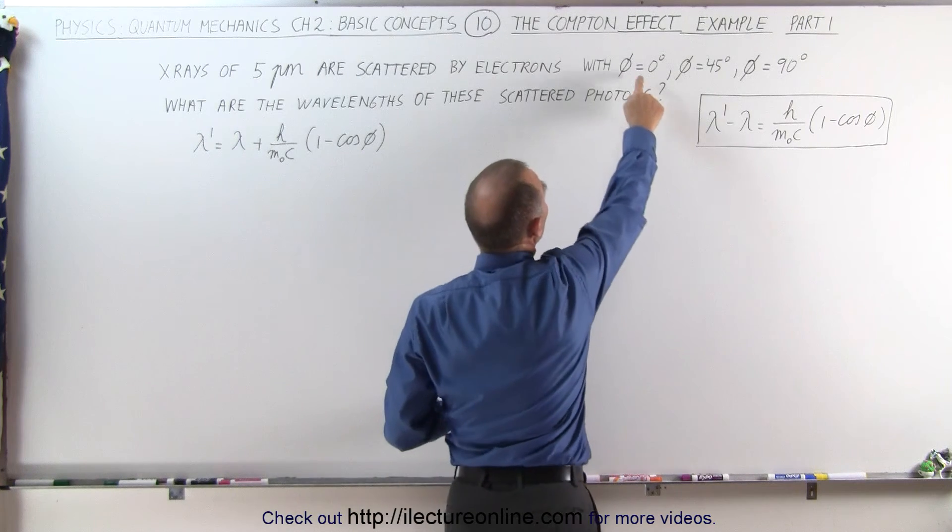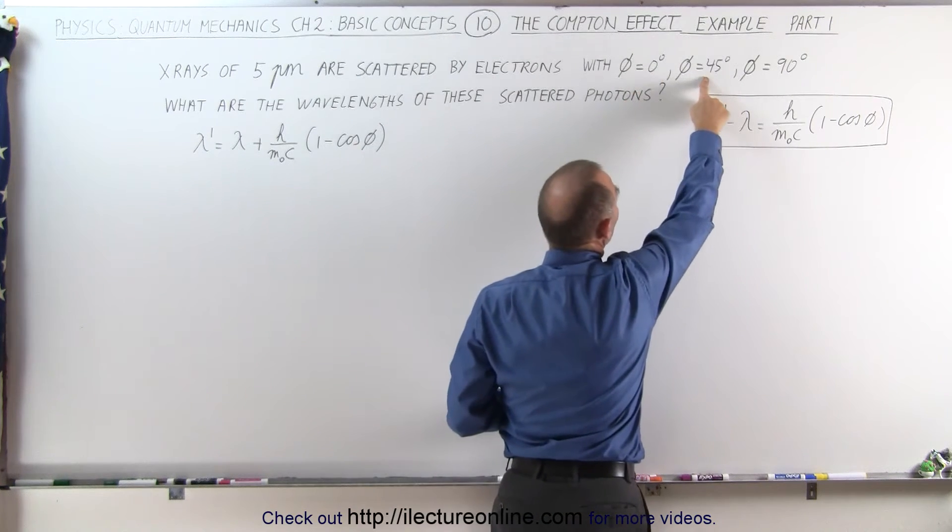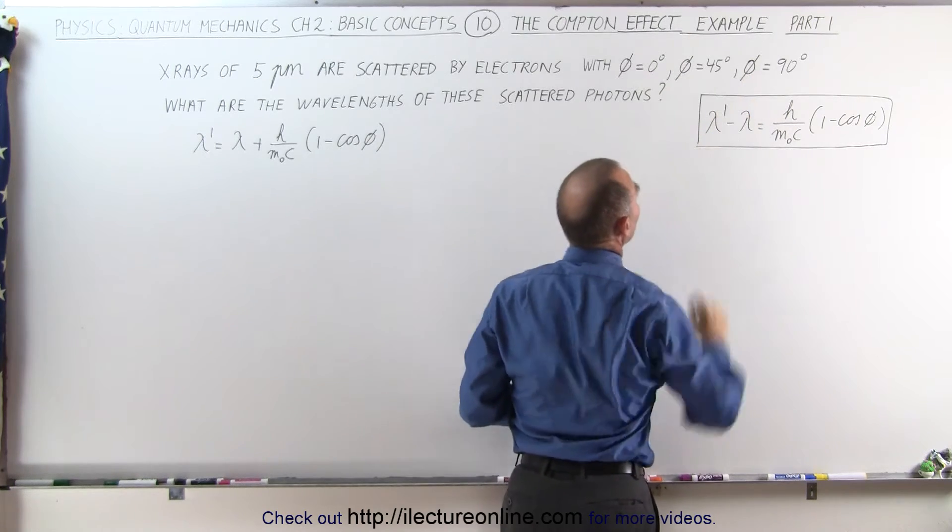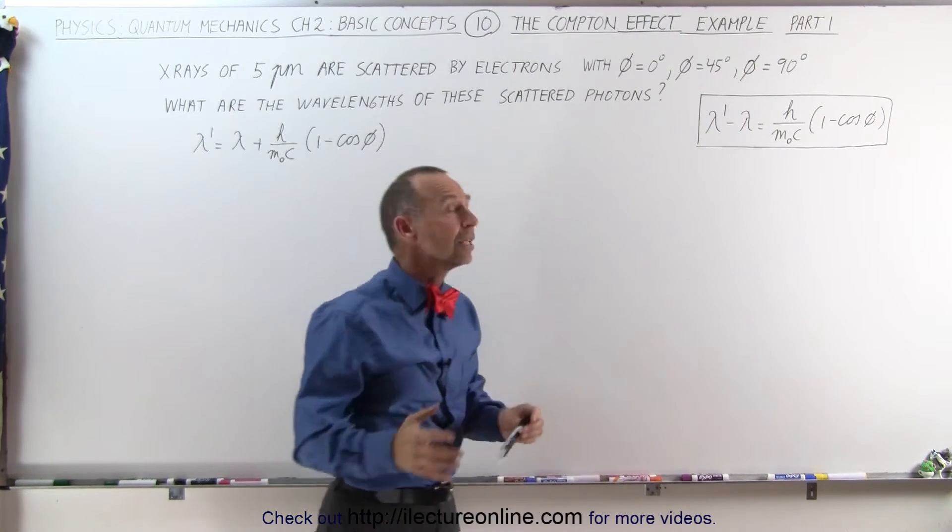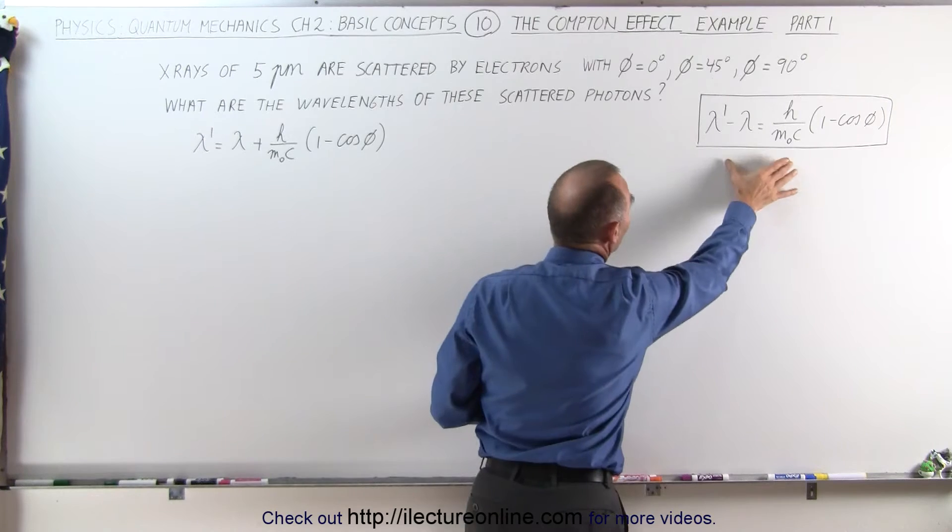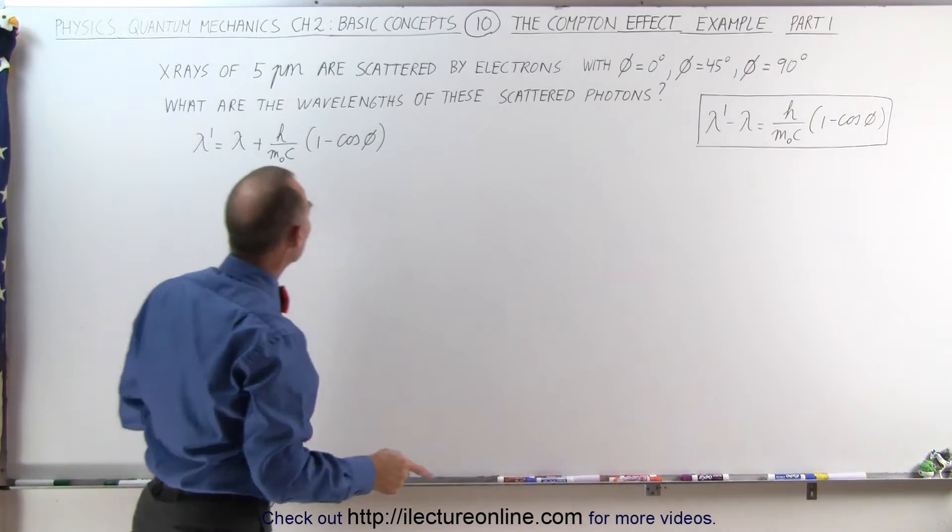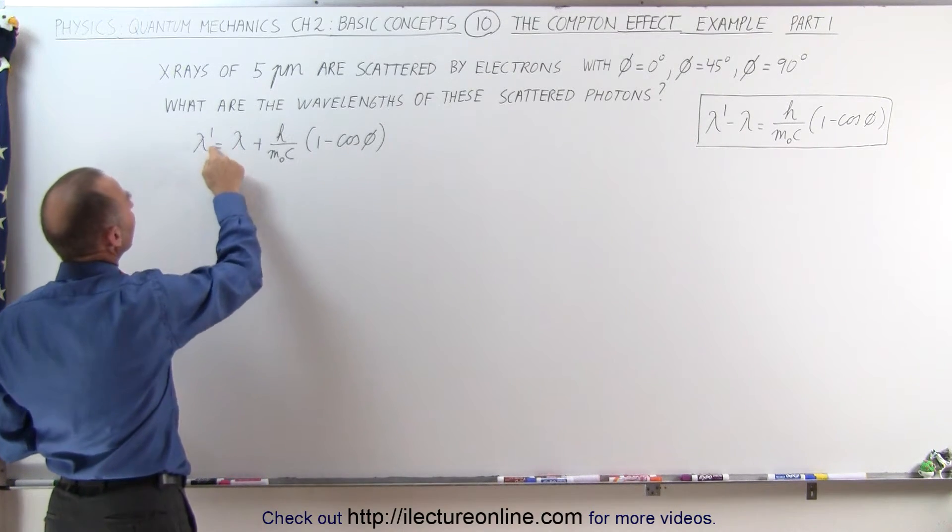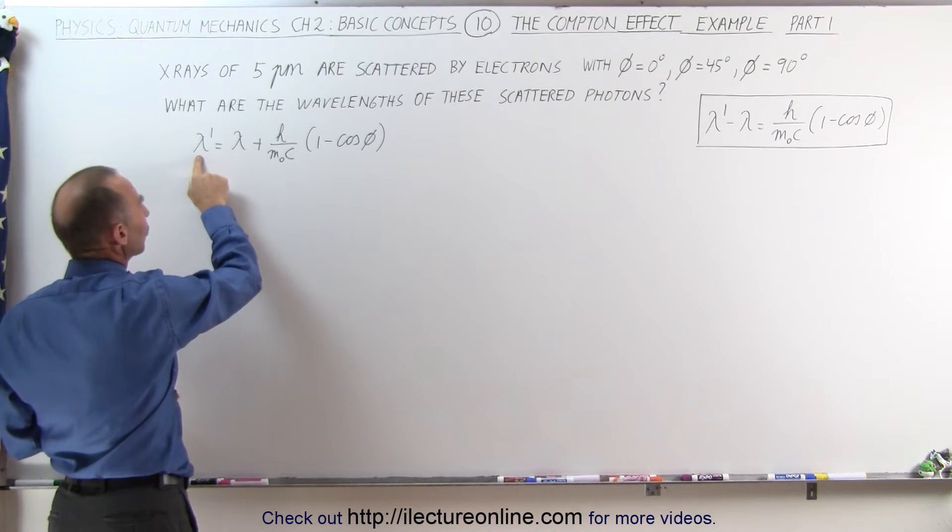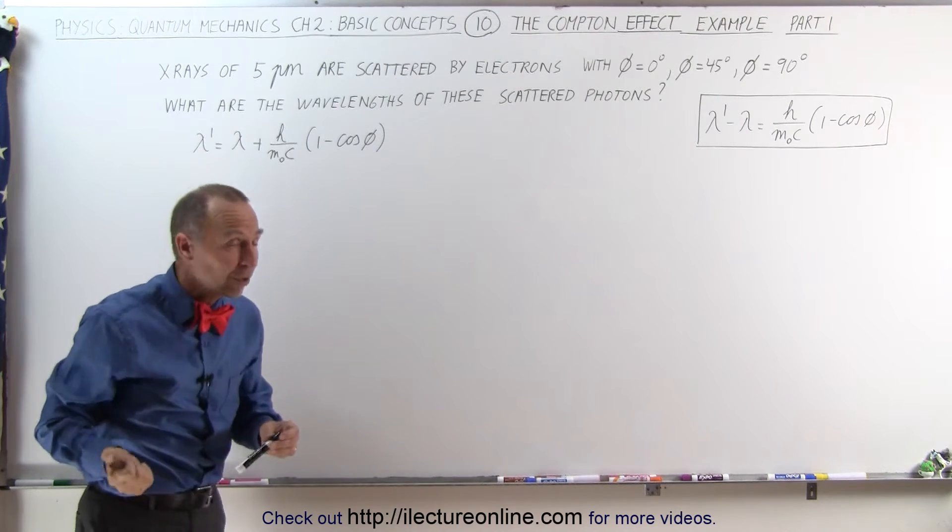One angle is zero degrees, the other set is at 45 degrees, and the third set is scattered at 90 degrees. And of course this is the Compton scattering equation which we have rewritten here to calculate the outgoing wavelength or the wavelength of the outgoing photons.